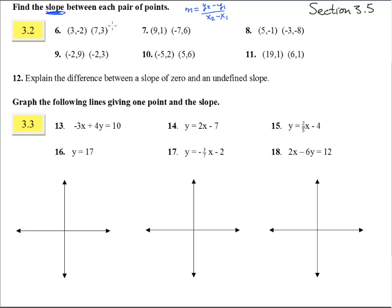For this one we're going to have 3 minus negative 2, do the y's first, over the x's 7 minus 3, and so we get the slope is 3 plus 2 is 5 over 4, 5 fourths.